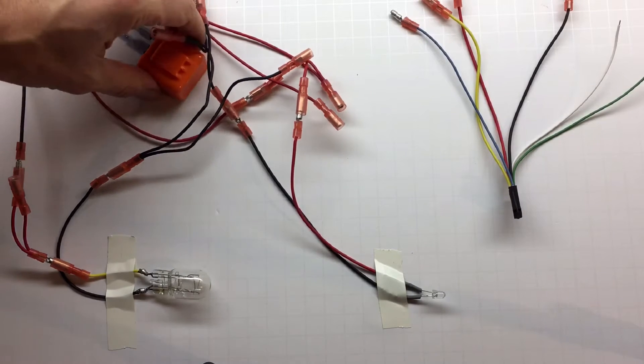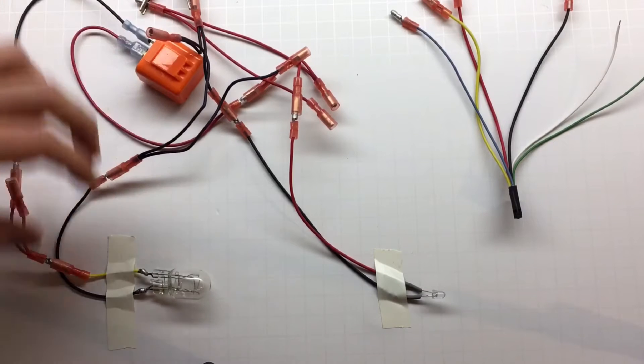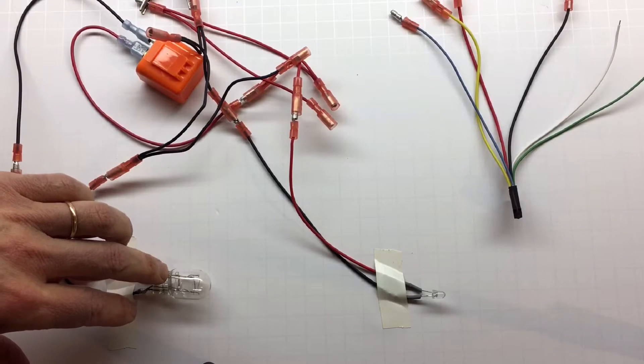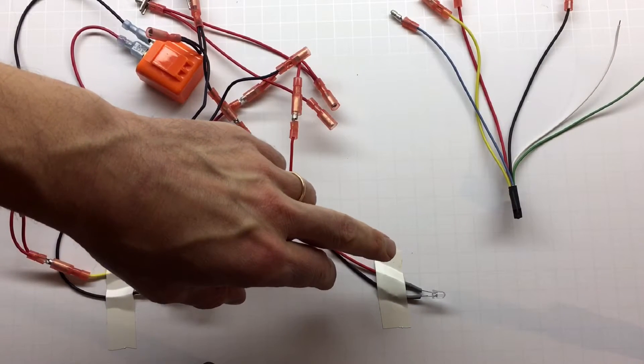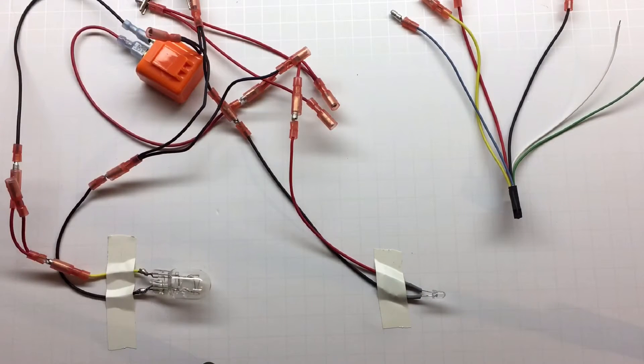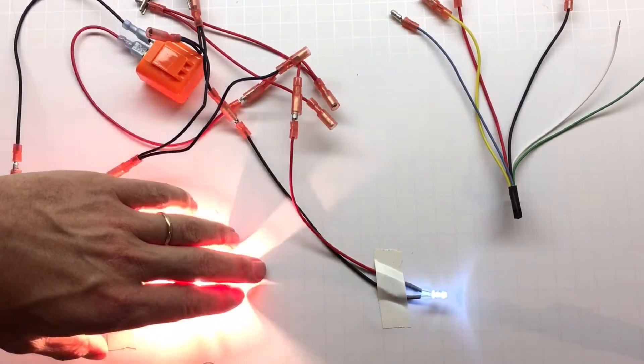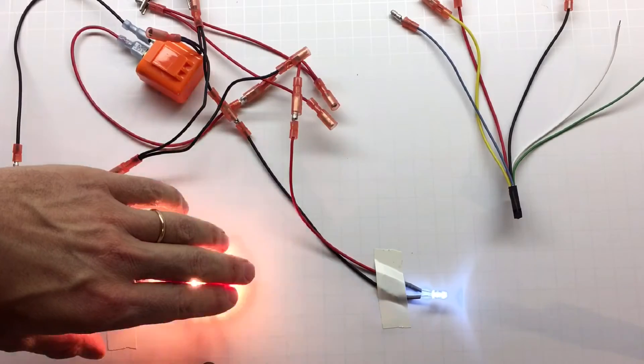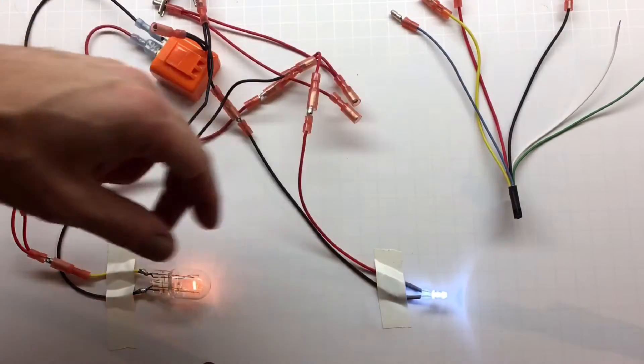So what I have here is a turn signal relay connected to the bulb, and I have a LED light connected to the power that will simulate our running light. So if I turn the power on, I have a turn signal coming on and off and the running light just on all the time.